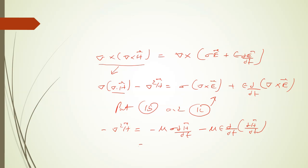The minus sign is common, so minus del squared H equals minus mu sigma dH over dt minus mu epsilon d squared H over dt squared. The minus signs cancel, giving del squared H equals mu sigma dH over dt plus mu epsilon partial squared H over partial t squared. This is the wave equation — the mathematical expression for a wave equation in a conducting medium. I hope you have understood the derivation. Thank you, thanks a lot.